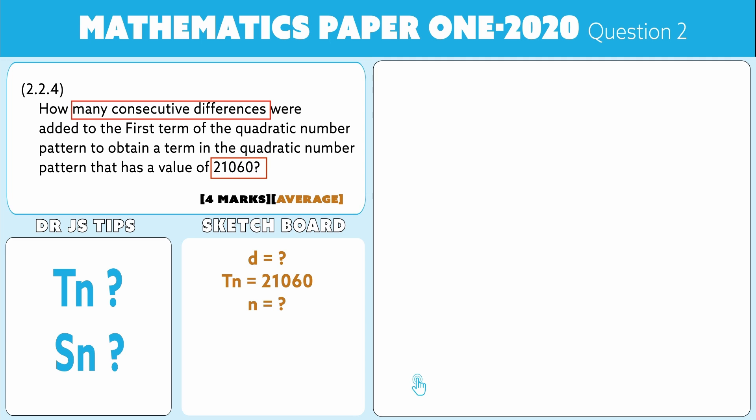Folks, please remember they are not asking us for n, because that would have meant, if the question was to find the n value, they would have said which term number is 21,060. We are going to find n most probably, but we need to remember that we're zooming in on the differences. And to remind you, it is going to be Tn which is a plus, look at this, (n - 1)d. There's n - 1 differences added.